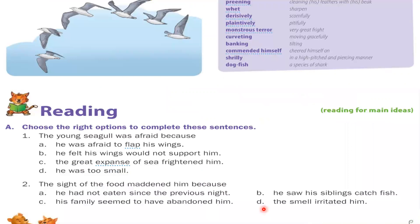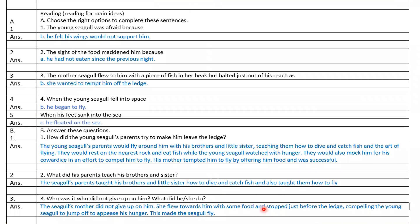Now let's understand the questions of this chapter. First question — Reading: Choose the right options to complete these sentences. 'The young seagull was afraid because...' — the answer is: he felt his wings would not support him. That was the reason he did not get the courage to fly and was afraid.